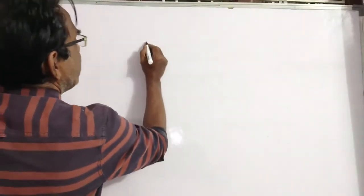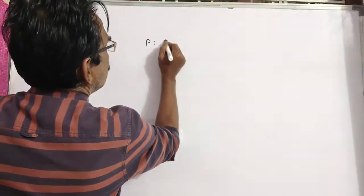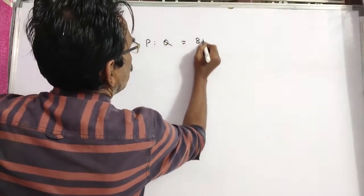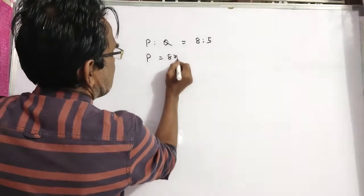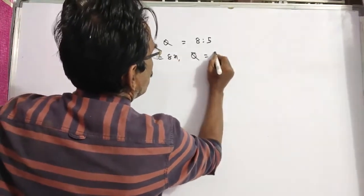Now let us see the problem. The ratio of present ages of P and Q is 8 is to 5. So P is to Q is equal to 8 is to 5. It implies P is equal to 8x and Q is equal to 5x. These are the present ages.